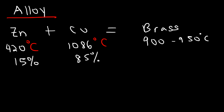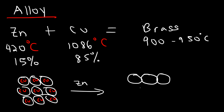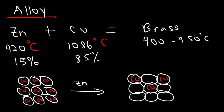You need to be familiar with a substitutional alloy versus an interstitial alloy. Brass is a substitutional alloy. If we have a chunk of copper metal where every atom in the structure is copper, and we add zinc metal to the mix, zinc is going to replace or substitute some of the copper atoms. That's why this particular alloy is known as a substitutional alloy — zinc substitutes some of the copper atoms.